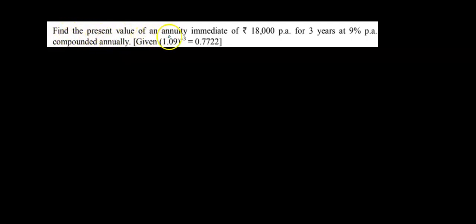Find the present value of an annuity immediate of Rs.18,000 per annum for 3 years at 9% per annum compounded annually. It is given that 1.09 raised to minus 3 is 0.7722.